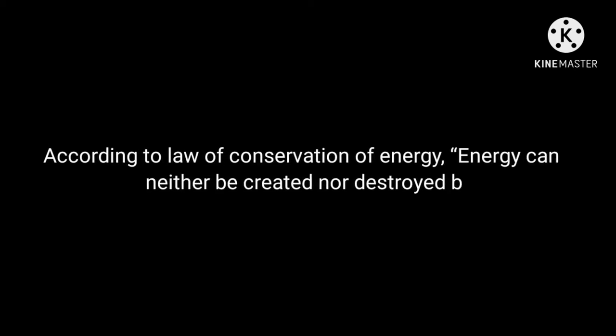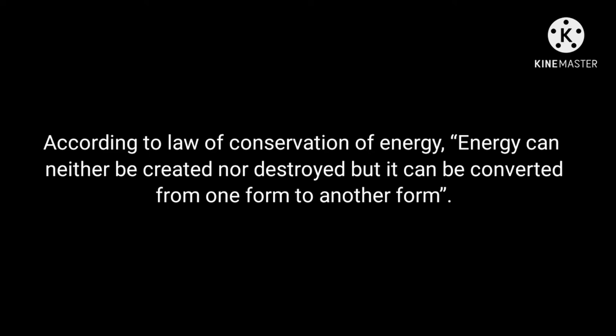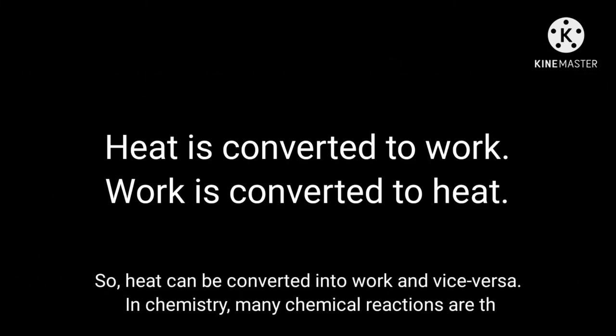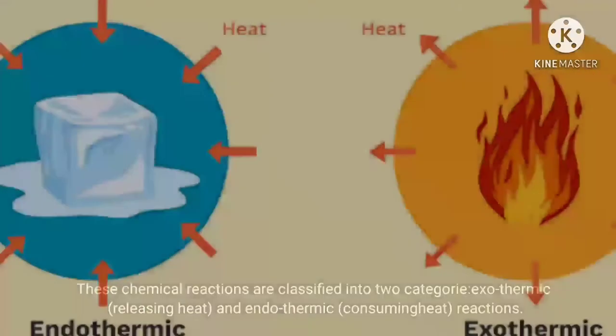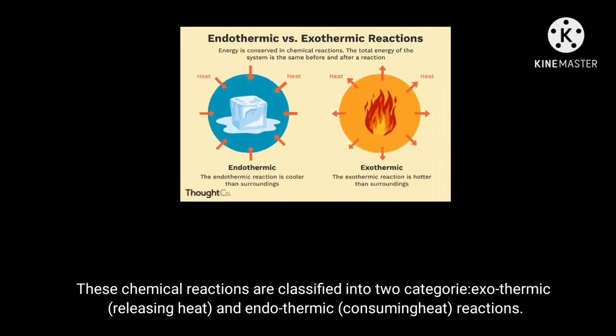According to the law of conservation of energy, energy can neither be created nor destroyed, but it can be converted from one form to another form. So heat can be converted into work and vice versa. In chemistry, many chemical reactions involve heat. These chemical reactions are classified into two categories: exothermic — releasing heat, and endothermic — consuming heat reactions.